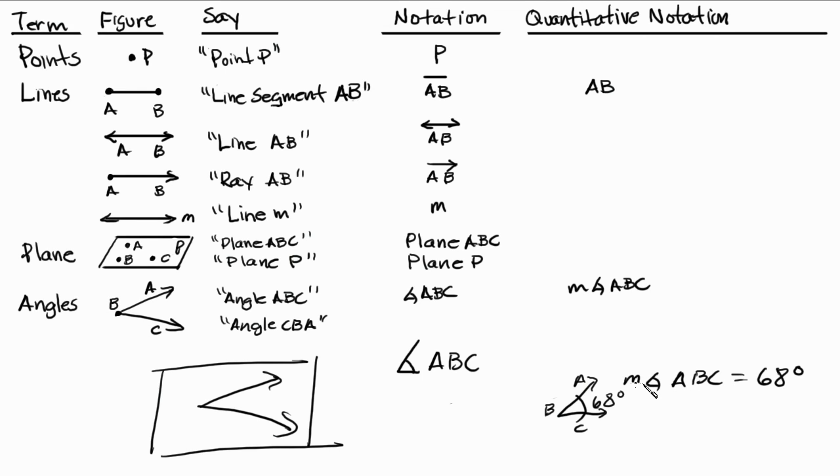Okay, you're talking about quantity. What is the measure of this angle ABC? The measure of the angle ABC, or measure of angle ABC, is equal to 68 degrees.